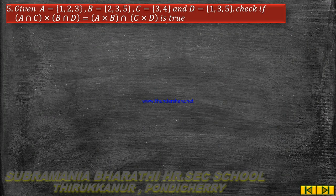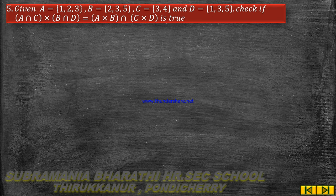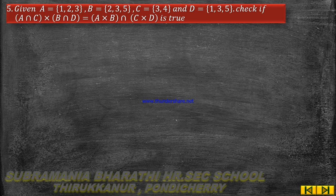Students, 10th standard mathematics, Chapter 1: Relations and Functions, Exercise 1.1, Question Number 5. Given: elements of A = {1,2,3}, elements of B = {2,3,5}, elements of C = {3,4}, and elements of D = {1,3,5}. We need to check if (A∩C) × (B∩D) = (A×B) ∩ (C×D) is true.